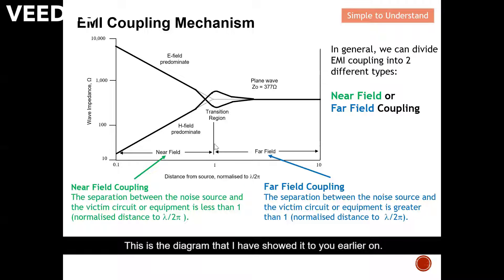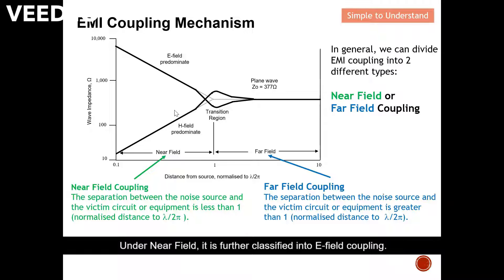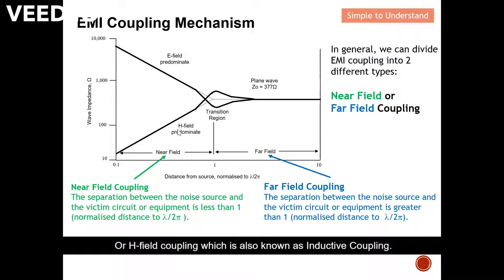This is a diagram that I've shown to you earlier. EMI coupling can be divided into two different types: either near-field or far-field. This is the imaginary line — anything beyond this imaginary line we call far-field, and anything less than the imaginary line we call near-field. Under near-field, it is further classified into E-field coupling, also known as capacitive coupling, or H-field coupling, also known as inductive coupling. Today we are going to study what is E-field or capacitive coupling.